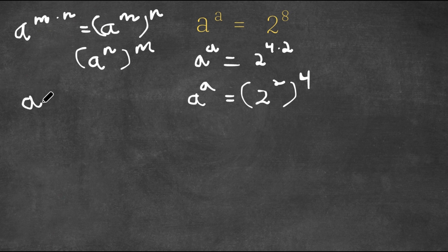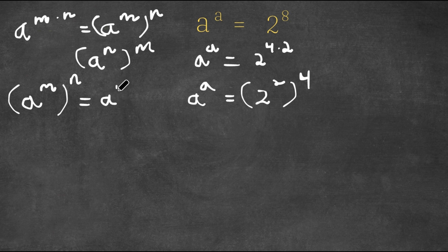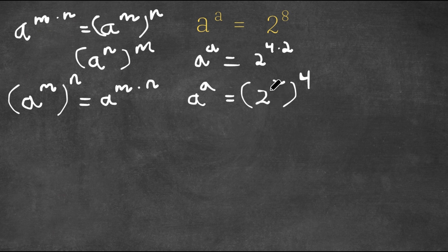Now, if we have something in the form a to the power of m to the power of n, this is equal to a to the power of m times n. So this would equal 2 to the power of 2 times 4. However, I'm not going to do that — I'm simply going to solve what's in the parentheses. So 2 squared equals 4, and now I have 4 to the power of 4 is equal to a to the power of a.